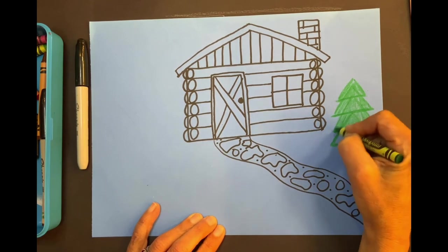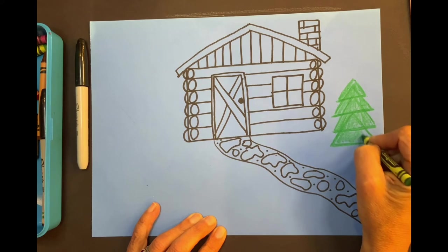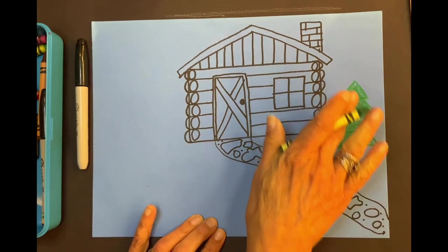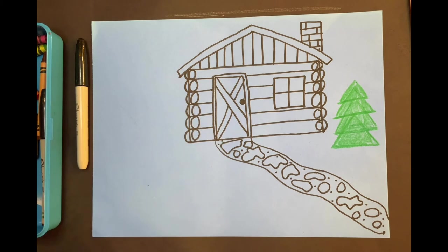Evergreen trees do not lose their leaves in the winter. They keep green leaves all year long. Great, so this tree is more in the front yard. So we say it's in the foreground.